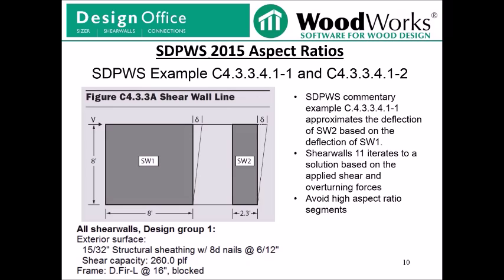We are going over examples using the same shear line details included in the SDPWS commentary example C4.3.3.4.1. Just to be clear, the SDPWS commentary example C4.3.3.4.1-1, which covers deflection-based distribution along a shear line, approximates the deflection of shear wall 2 based on the deflection of shear wall 1, while ShearWalls 11 iterates to a solution based on applied shear loads and overturning forces. The example is useful because it includes a high aspect ratio segment, although I would recommend trying to avoid high aspect ratio segments, as the total deflection of a high aspect ratio segment is multiplied by the aspect ratio factor — so for shear wall 2, the hold-down component will be multiplied by 3.48.